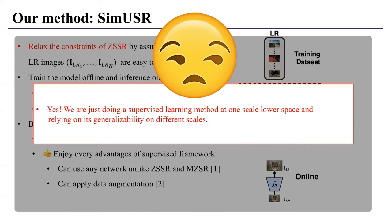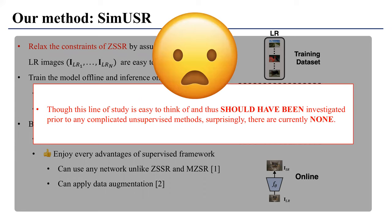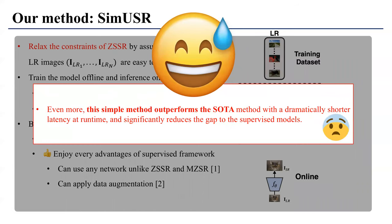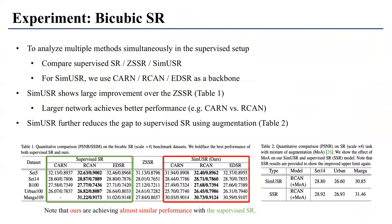Yes, we are just doing supervised learning at one scale lower and relying on generalizability to a different scale — it is trivial. But this line of study is really easy to think of and should have been investigated prior to any fancy technique. Surprisingly, nobody has investigated this simple baseline. Even more, this simple method outperforms the state-of-the-art with dramatically shorter latency at runtime and significantly reduces the gap to the supervised model. We ourselves never thought this would be our main algorithm — it was meant to be a basic baseline. But we felt it is worth reporting this blind spot for the community, noting that sometimes we have to first check the basics.